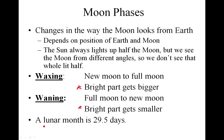The moon takes 29 and a half days to go through a whole lunar cycle. So a lunar month is 29 and a half days — from new moon back to new moon is 29 and a half days.